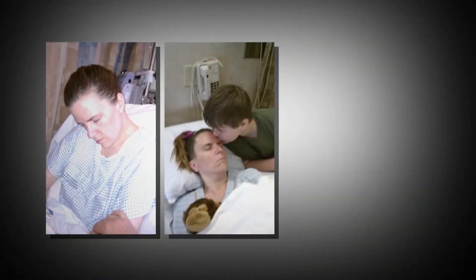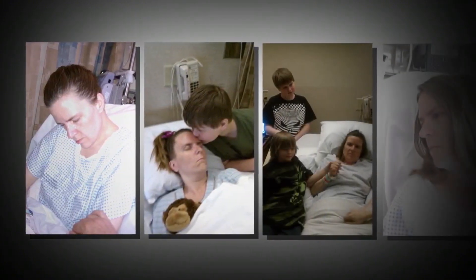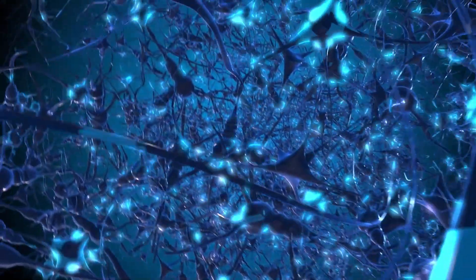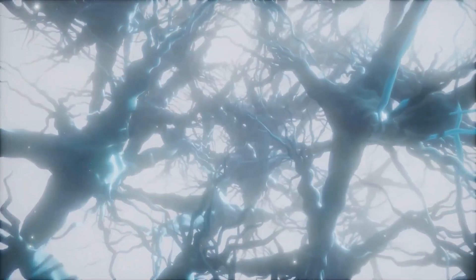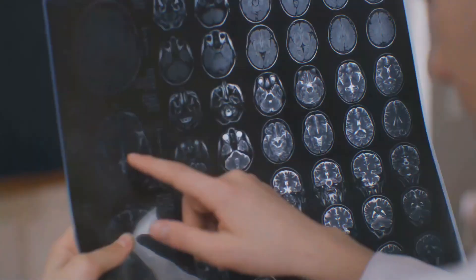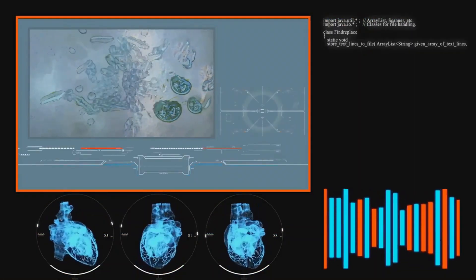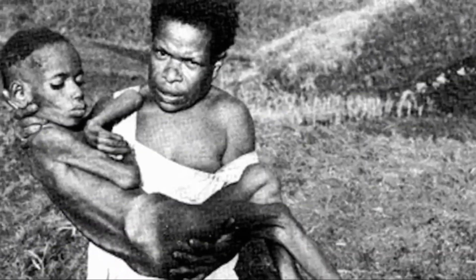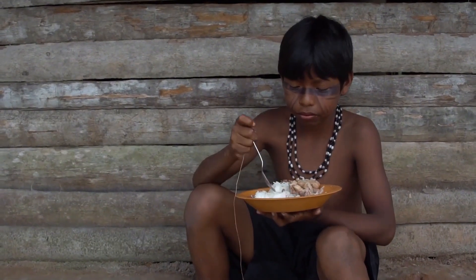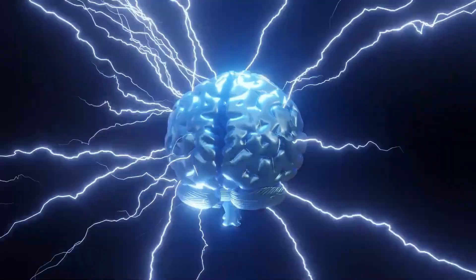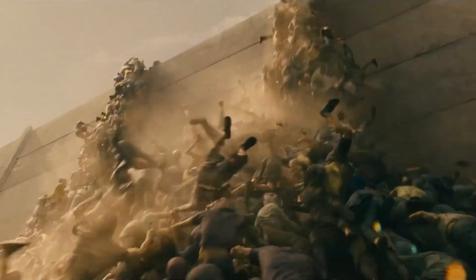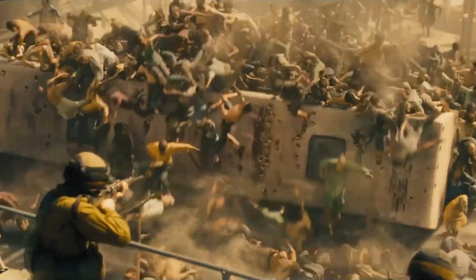Prions: the degenerative menace. Prion diseases such as Creutzfeldt-Jakob disease (CJD) and Kuru are caused by misfolded proteins that induce neurological degeneration. These diseases lead to symptoms like dementia, loss of coordination, and personality changes, resembling the cognitive decline of zombies. Prions are notoriously resilient, resisting most sterilization methods, and are transmitted through contaminated tissue or, in rare cases, consumption — for example, Kuru via cannibalism. However, prion diseases are slow to develop, often taking years to manifest symptoms, and are not highly contagious. A zombie-like prion would need to become rapidly transmissible and accelerate neurological damage while preserving motor functions — a scenario that stretches biological plausibility.